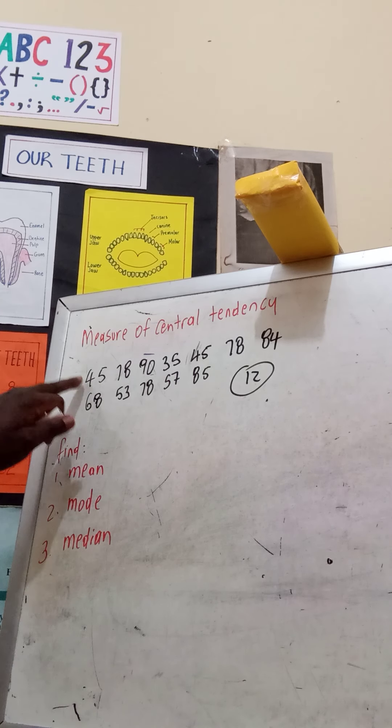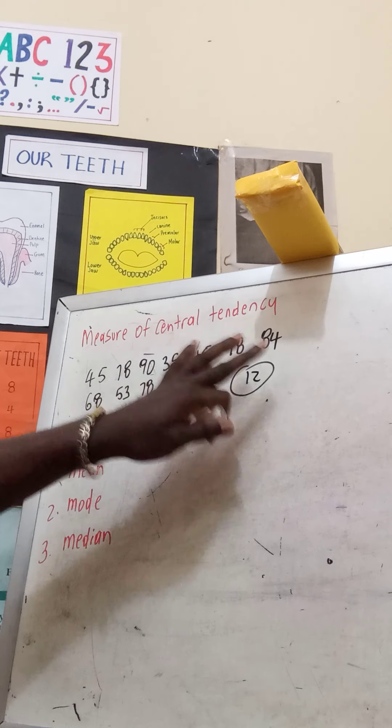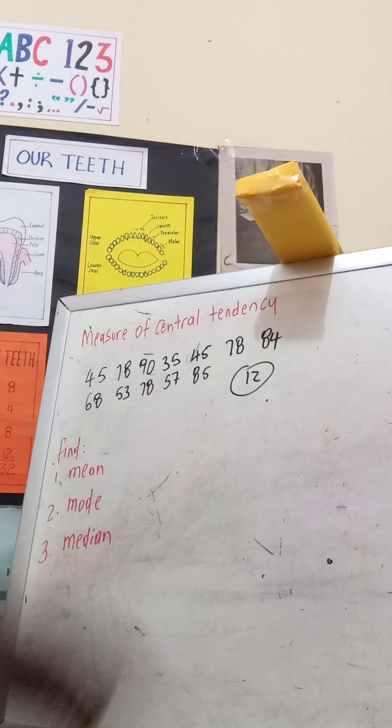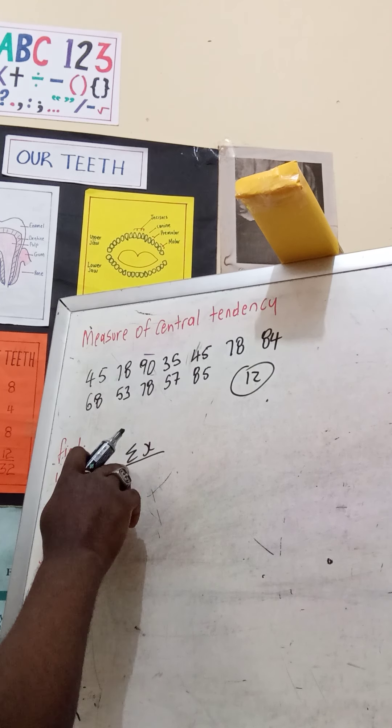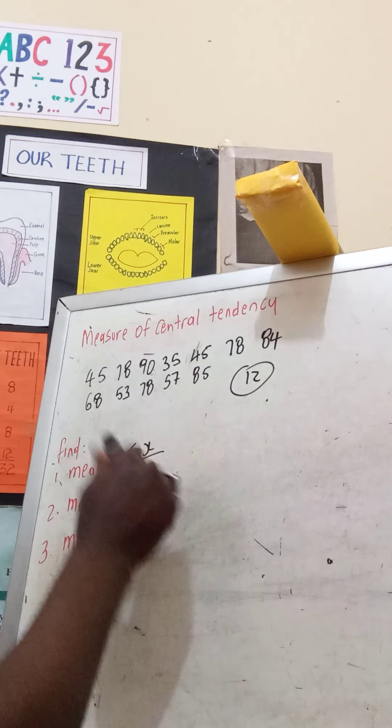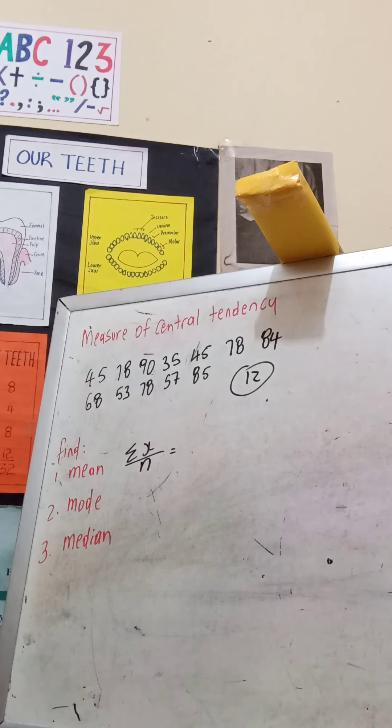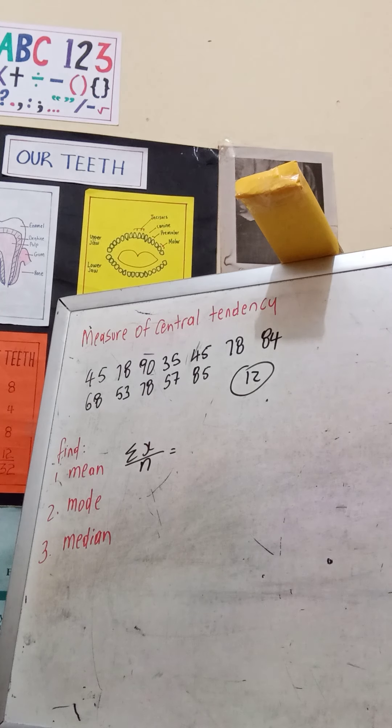Twelve students are in the class - these are the grades collected, and this could be percentage. To find the mean, you first have to add the total of all these variables, then divide them by the number of students in the class.